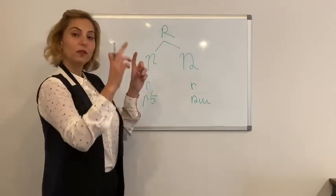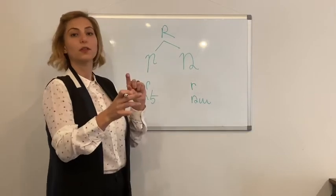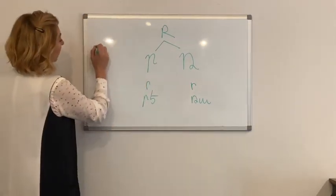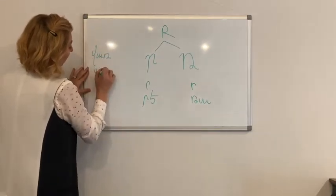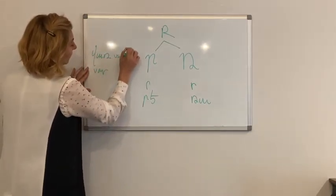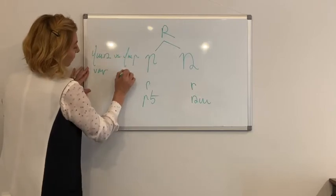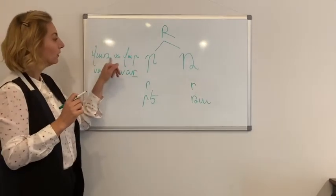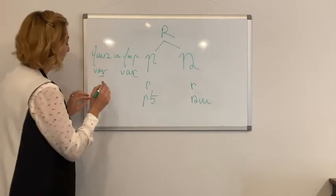Now, let me give you some word pairs so you can see the difference. We can say var versus var. In English, obviously, I'm using the same R. This is bright, this is below or down.